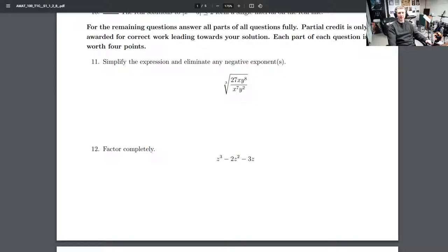x is on top and x is on bottom, so we're gonna use the rule that you can subtract these exponents: 7 minus 1. And then y to the 8th over y squared - we're gonna use the rule that we can subtract these exponents.